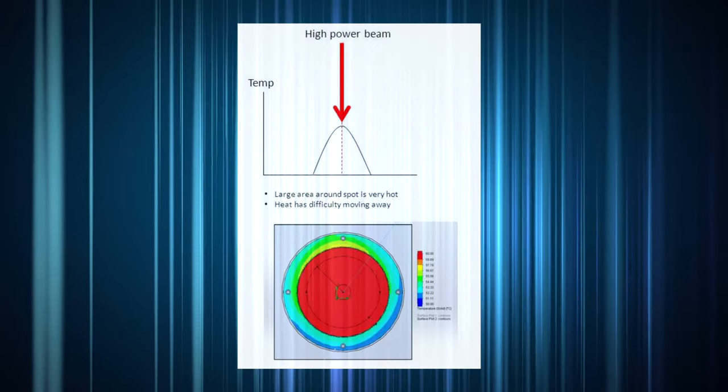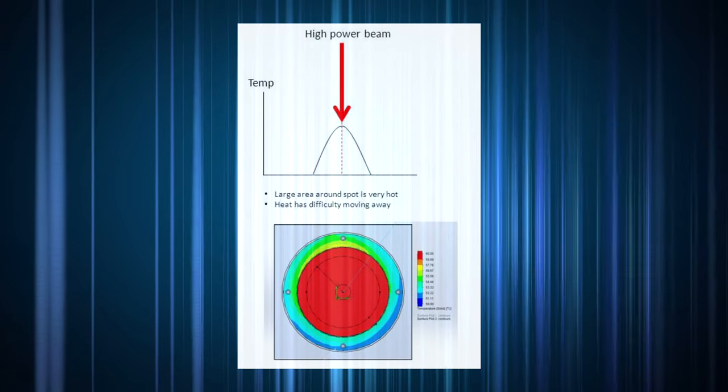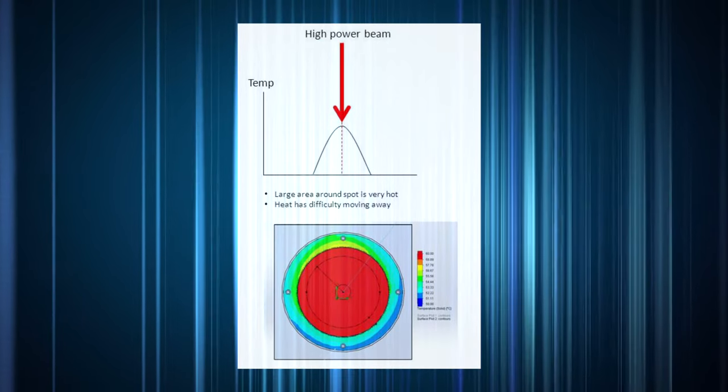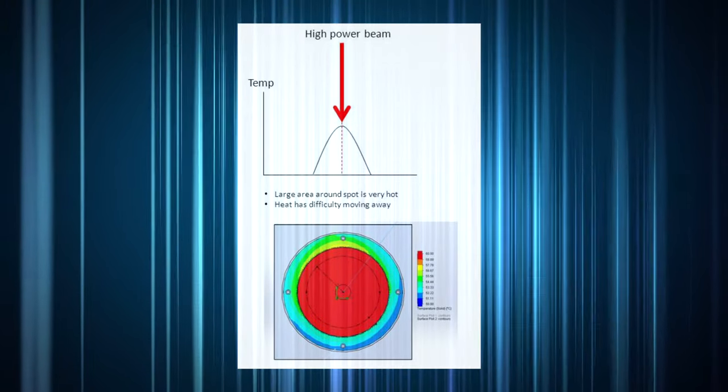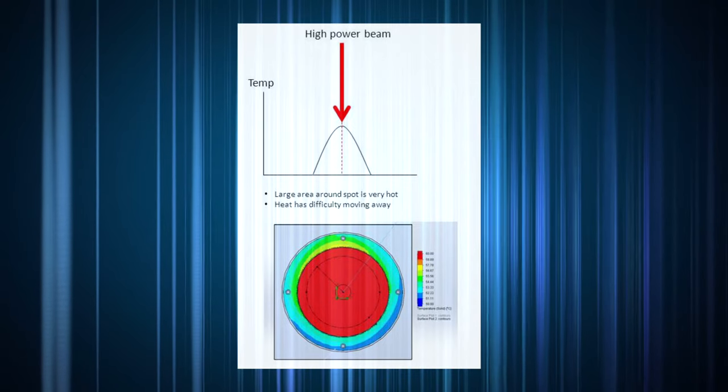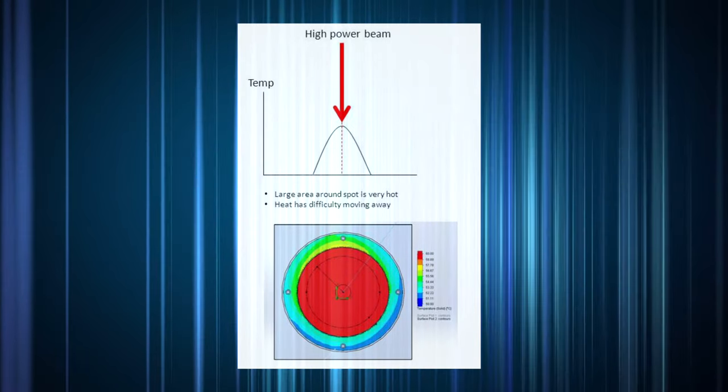On the other hand, when the power level is high, a large area around the laser spot is very hot. This thermal barrier makes it difficult for the continuously generated heat from the incoming beam to move out of the way.